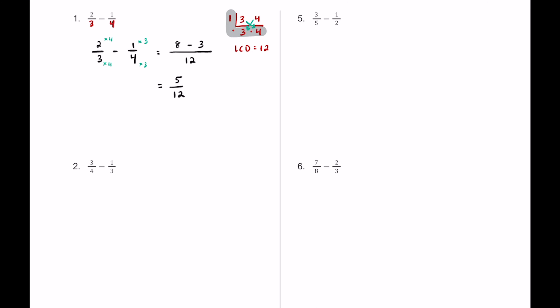For number two we have three-fourths take away one-third. They have the same denominators of four and three, so we already know from the last example that they meet at twelve. We multiply three-fourths by three over three and one-third by four over four. Three times three is nine, one times four is four, so nine minus four is five — giving us five-twelfths.